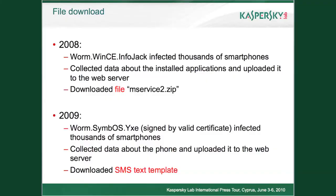In 2008, a worm named InfoJack for Windows Mobile devices appeared and infected thousands of smartphones. It tried to collect data about installed applications on the smartphone and upload it to a cybercriminal's web server. After some time, it tried to download a file named MSService2.zip. After successfully downloading that file, it extracted it into the Windows folder and executed it.